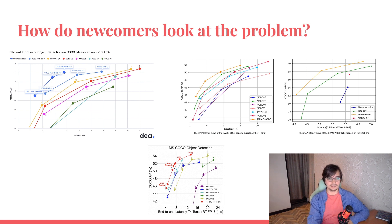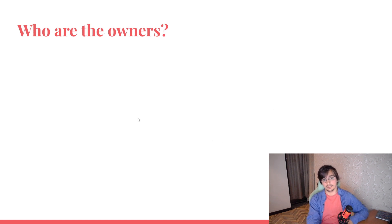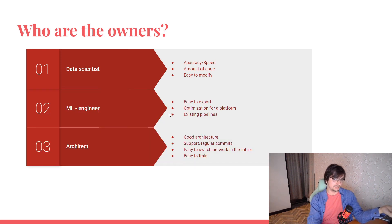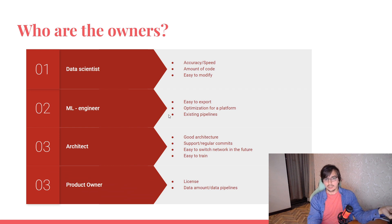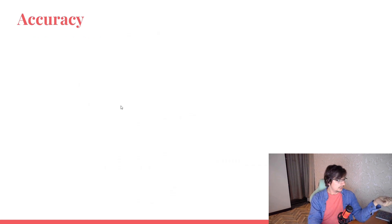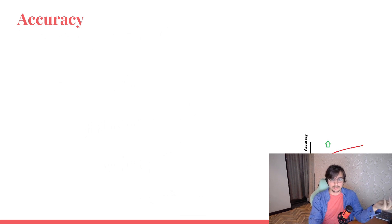Talking about which network to choose for your production needs to start with a simple question: who will be affected by it? Here is a small list of factors — data scientists, ML engineers, architects, and the product owner. Startups may not have all of these roles, but it's important to realize that a network is not just about accuracy and speed; it's also about the complexity of support and legal risk.